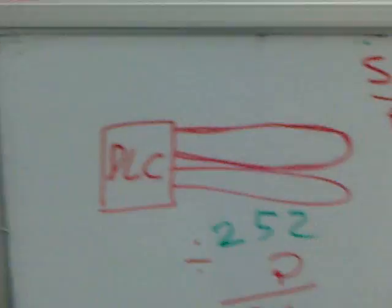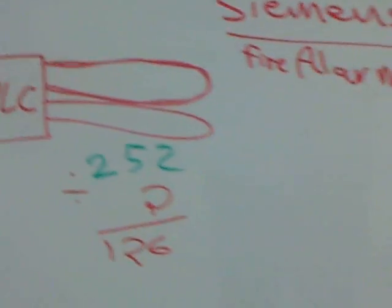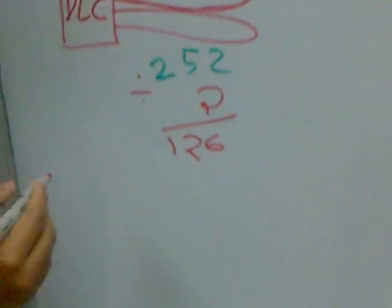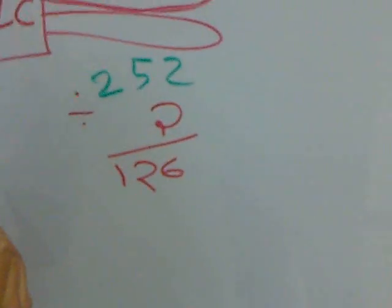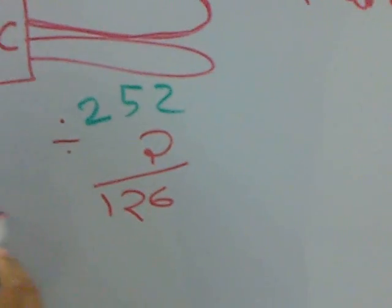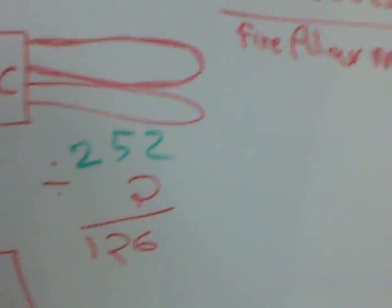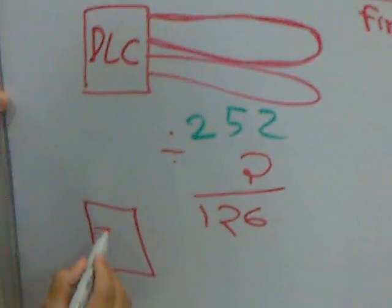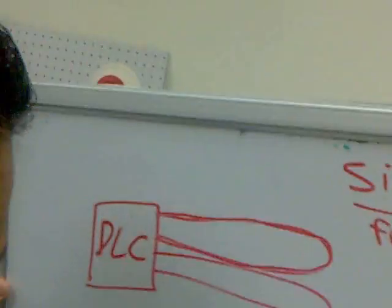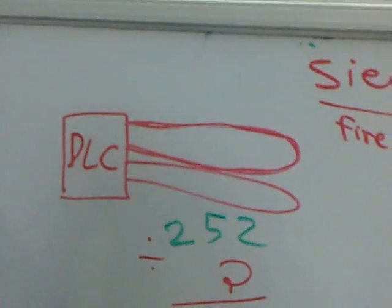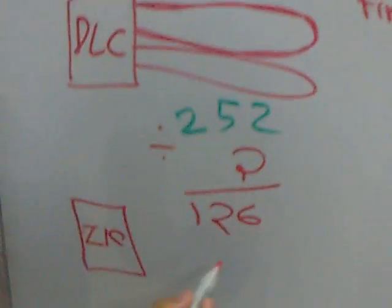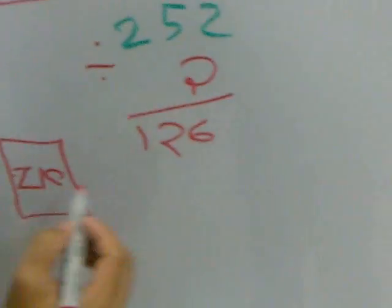Now we go to the ZIC — the Zone Indicating Card. This is the second type of card. The first type, DLC, we use with detectors, and the second, ZIC, we use with notification devices.